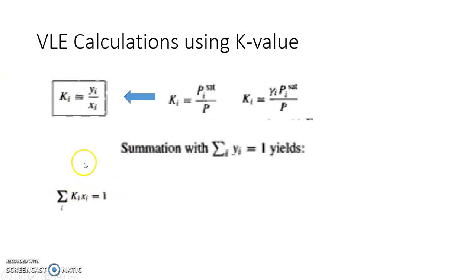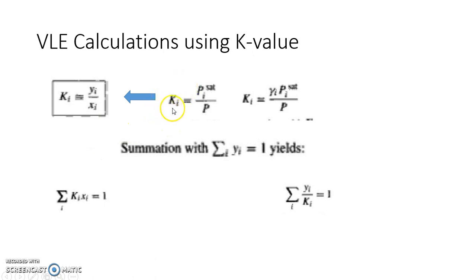If I know y, I can calculate using Σ(yi/ki) = 1. For example, in bubble-T calculations I know x and T, so knowing x and T, if I have ki values, I compute ki·xi and check if the summation equals 1. This technique reduces mathematical calculations significantly.